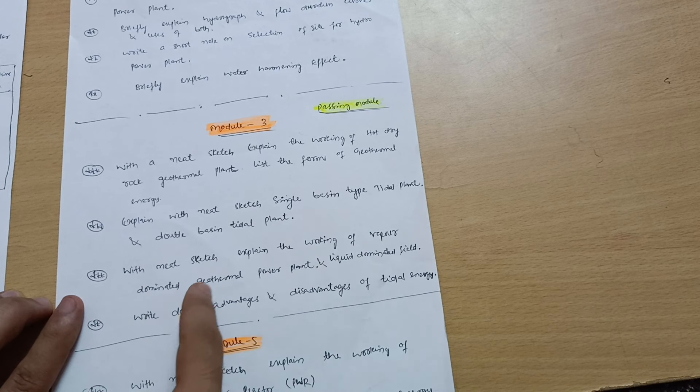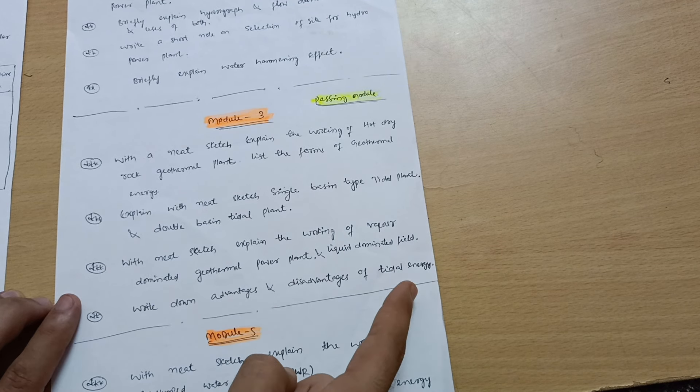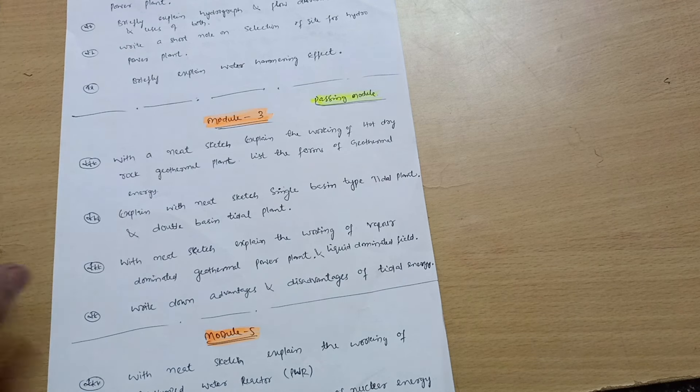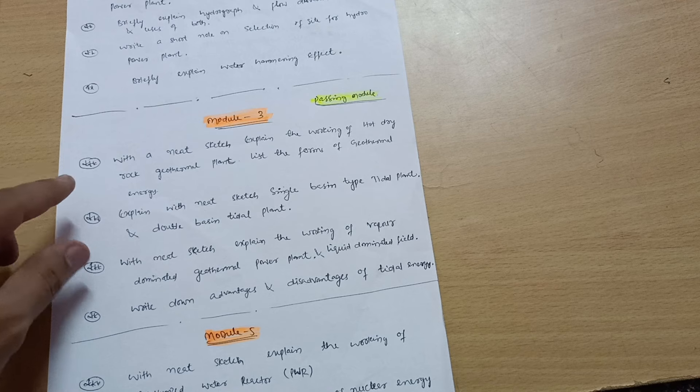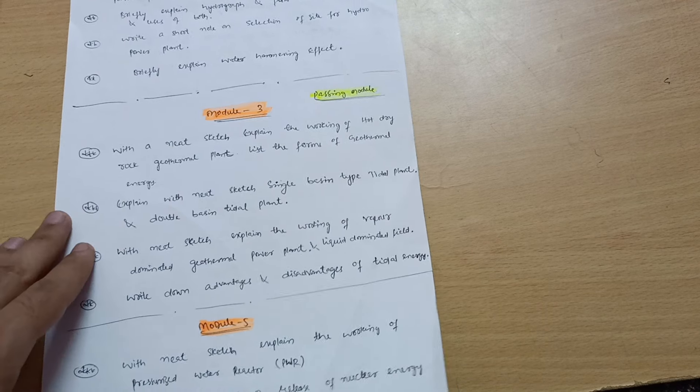With neat sketch explain the working of vapor dominated geothermal power plant and liquid dominated field. Write down advantages and disadvantages of tidal energy. These two questions are repeatedly asked in the VTU examination. Just try to focus, try to understand the theoretical part and diagrammatic part, so rest all the things will be easier for you.